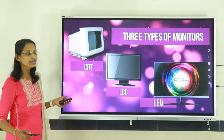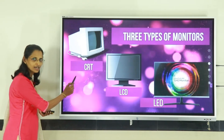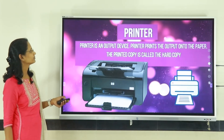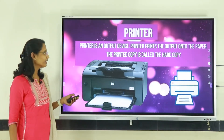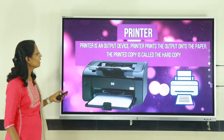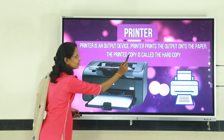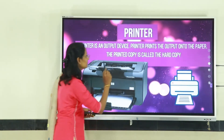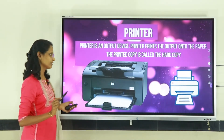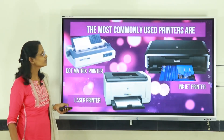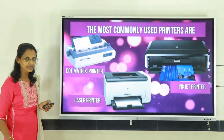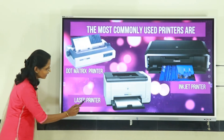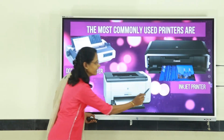There are three types of monitors: CRT, LCD, and LED. The next output device is the printer. Printer is an output device; it prints output onto the paper — this is called a hard copy. The most commonly used printers are three types: dot matrix printer, laser printer, and inkjet printer.